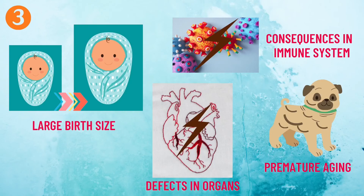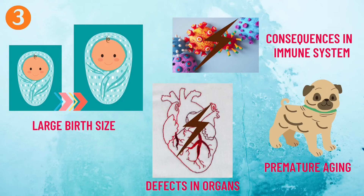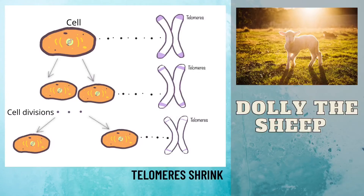Third, researchers have noticed harmful effects on cloned mammals, including defects in vital organs such as the brain, liver, and heart, as well as consequences on their immune system. Clones may also experience premature aging and larger birth size. Additionally, as part of natural aging, telomeres — the tips of chromosomes — progressively shorten during cell division. Eventually they shrink so much that the cell loses its ability to divide and dies. Therefore, if cells taken from an adult are cloned, the clone may have a shorter lifespan because the cell's chromosomes are already shorter than normal.